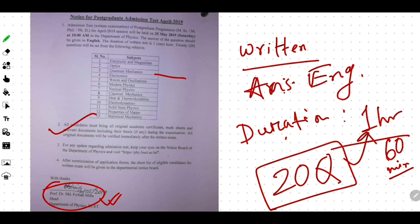All candidates must bring originals. The exam will start next time. All original documents will be verified immediately after the written exam. Keep your eyes on the notice board — the notice board is pinned and available. Visit the website. After scrutinization of application forms, the shortlist of eligible candidates for the written exam will be given on the departmental notice board.